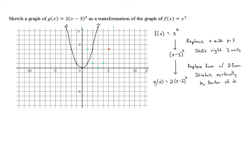This point at a height of 4 will end up at a height of 8. This point at a height of 1 will be at a height of 2. The vertex point stays right where it is because its y-coordinate is 0, and 2 times 0 is still 0 — anything on the x-axis stays put when stretching vertically. This point's y-coordinate doubles to 2, and the point with y equal to 4 goes all the way up to 8.